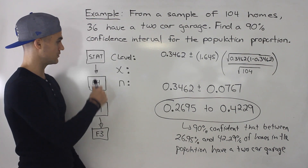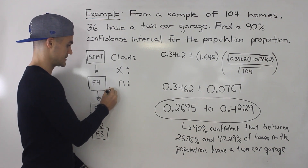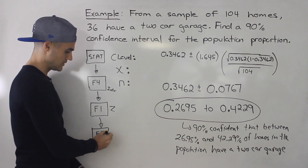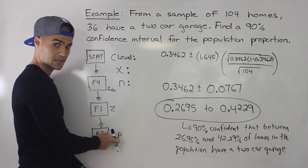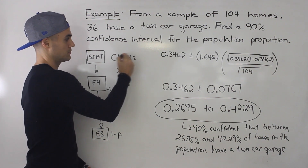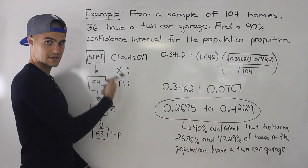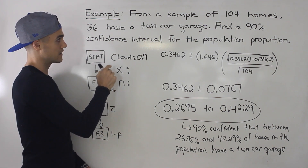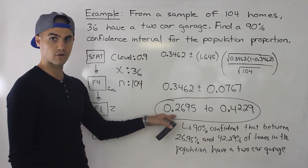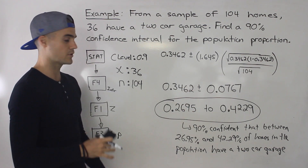Finally, using the calculator: go to the main menu, hit Stat, then F4 for Interval. Hit F1 since we're dealing with proportions and always use a Z distribution, then F3 for one proportion (1/P). On the input screen, enter the confidence level as 0.9, x equals 36, and n equals 104. When you execute, you should get a result very close to the manual answer — any small differences are due to rounding.